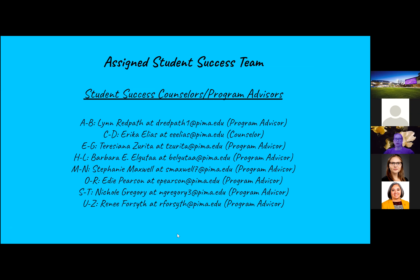Here's the list of liberal arts program advisors and it is based on your last name. We have a student success counselor named Erica Elias who provides academic advising for C through D. My name is Barbara and I provide advising for liberal arts general H through L. Based on your last name, you would be assigned to one of these program advisors.